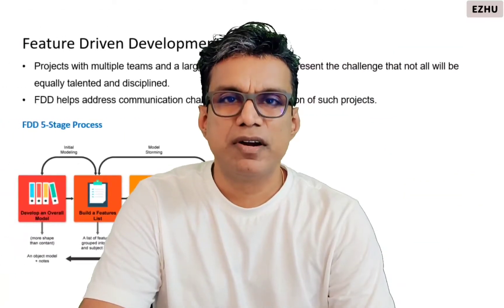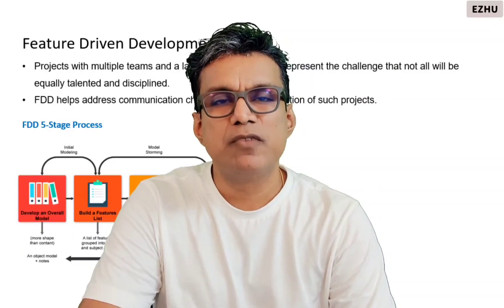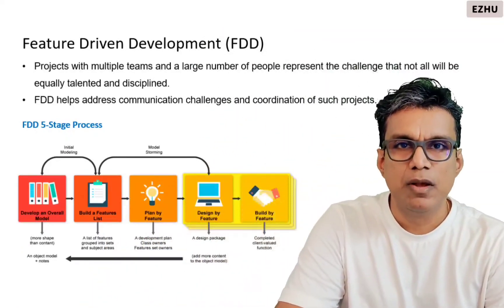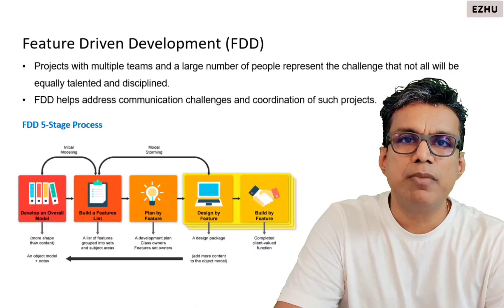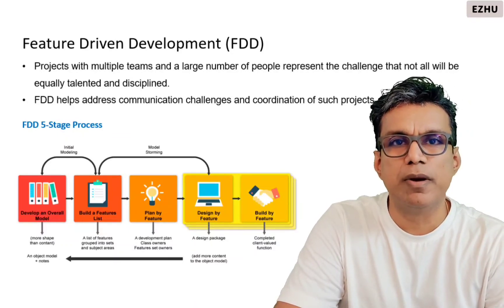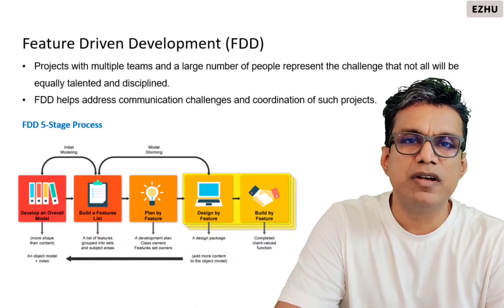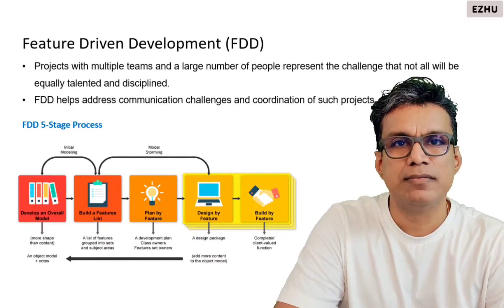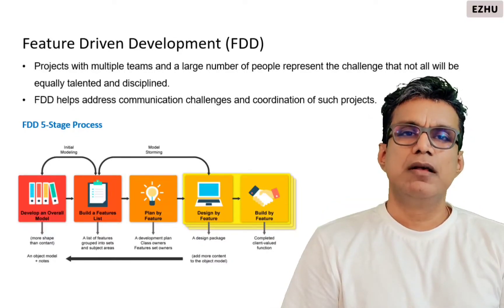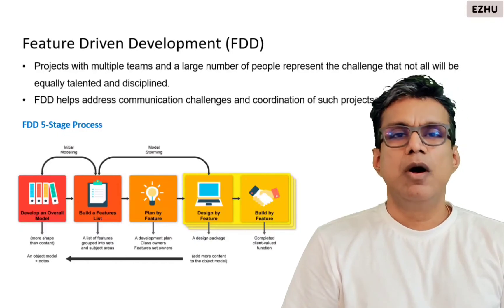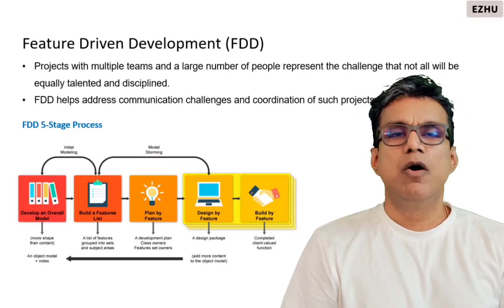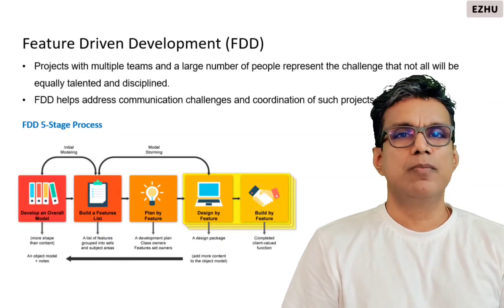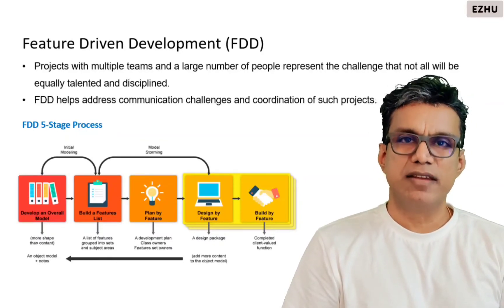Feature Driven Development is implemented for projects which operate with large teams, where all team members need not be equally talented or disciplined. The FDD framework helps in addressing such scenarios. Feature Driven Development offers solutions on how to organize the teams, how to program and write code, and is effective for all projects being delivered by large teams.